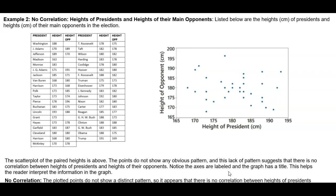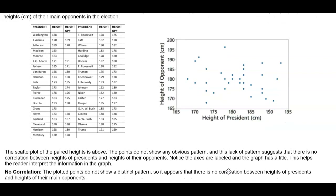Notice that the axes are labeled and the graph has a title. This helps the reader interpret the information in the graph. No correlation tells us that the plotted points do not show a distinct pattern. So it appears that there is no correlation between heights of presidents and heights of their main opponents.